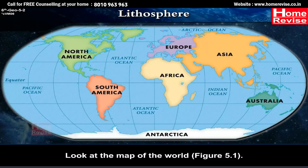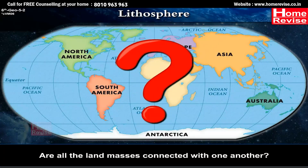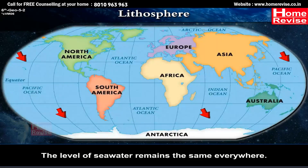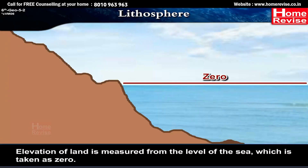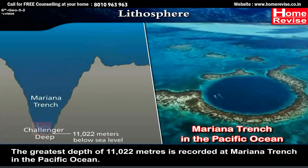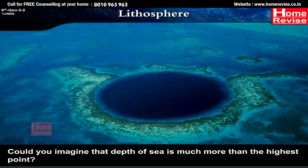Look at the map of the world, figure 5.1. Are all the land masses connected with one another? The level of sea water remains the same everywhere. Elevation of land is measured from the level of the sea, which is taken as zero. The highest mountain peak, Mount Everest, is 8,848 meters above the sea level. The greatest depth of 11,022 meters is recorded at Mariana Trench in the Pacific Ocean. Could you imagine that the depth of the sea is much more than the highest point?